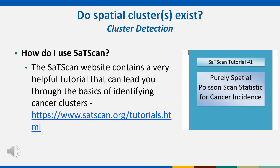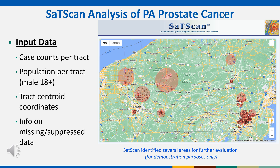If you are interested in a more thorough explanation, SaTScan has great documentation that can guide you through the process. We are using SaTScan today because it is free, widely used, and has a lot of applications to other fields. This slide shows output of running SaTScan for Pennsylvania prostate cancer at the census tract level. Cases are aggregated over the 10-year period 2010–2019. This analysis was run for prostate cancer rates and the data input included case totals per tract, male 18-plus population per tract, and tract centroid coordinates. Also included is information for which tracts had their data suppressed due to small numbers of cases or population.